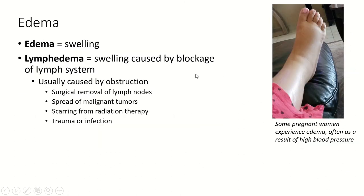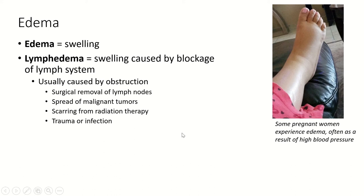Swelling is called edema, and lymphedema is specifically swelling caused by blockage of the lymphatic system. This is what edema looks like in a pregnant woman very close to giving birth. It's sometimes caused by high blood pressure, which forces excess blood plasma out at the capillaries more than the lymph vessels can handle, causing pooling in the lower extremities. Lymphedema is often caused by obstruction — sometimes scar tissue from removal of the lymph nodes, the spread of malignant tumors, or radiation therapy to treat a malignant tumor. Trauma and infection can also cause swelling, and severe swelling like this is a reason to see a doctor.